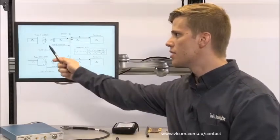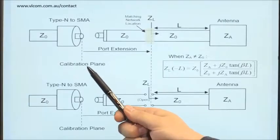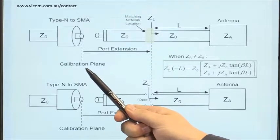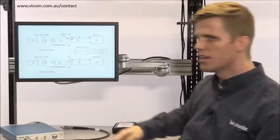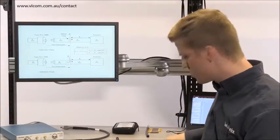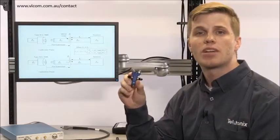The first step is to calibrate the VNA as close to the location of the matching network as possible. In this case, it's the end of the type N to SMA connector. And then to get the calibration plane to the location of the matching network, we're going to have to apply a port extension. So first, I'll calibrate using my type or my three and a half millimeter spinner cal kit at the end of the type N to SMA connector.